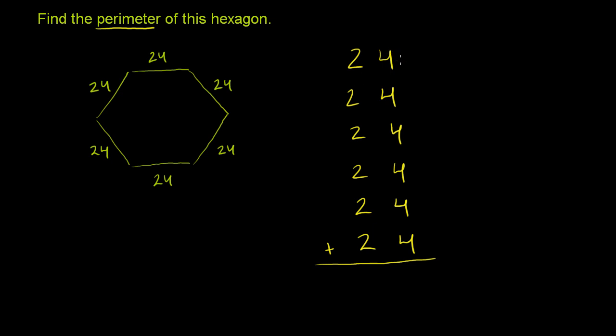So let's go first at the ones place. So 4 plus 4 is 8. 8 plus 4 is 12. 12 plus 4 is 16. 16 plus 4 is 20. 20 plus 4 is 24.